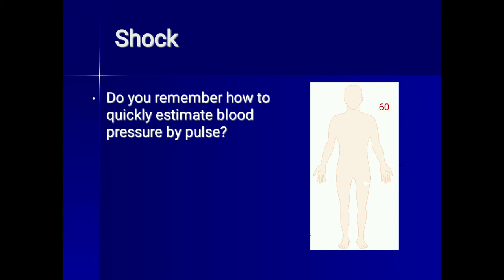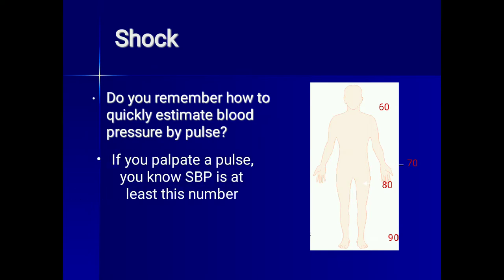To quickly estimate blood pressure: if you can feel the radial pulse, blood pressure is approximately 80 mmHg; if only the carotid pulse is palpable, it may be around 60 mmHg; if you can feel the dorsalis pedis pulse, blood pressure is likely 90 mmHg or more. This is a rough estimate — if you can palpate a pulse, you know the systolic blood pressure is at least that number.